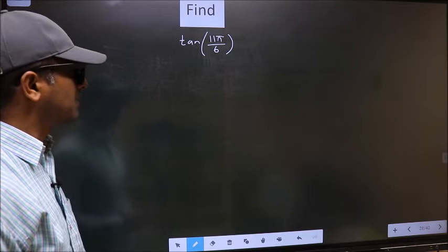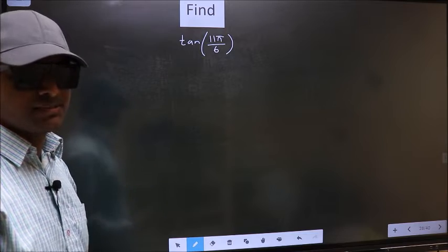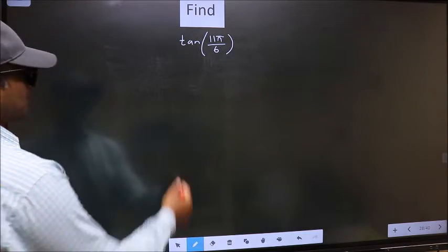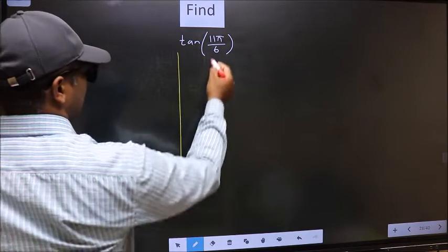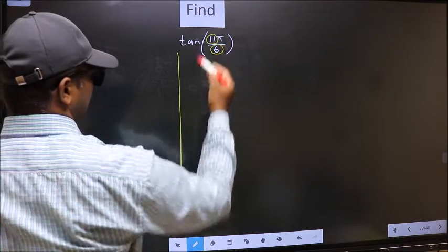Find tan(11π/6). To find this, we should follow this method. In the denominator, we have 6. In the numerator, we have 11.